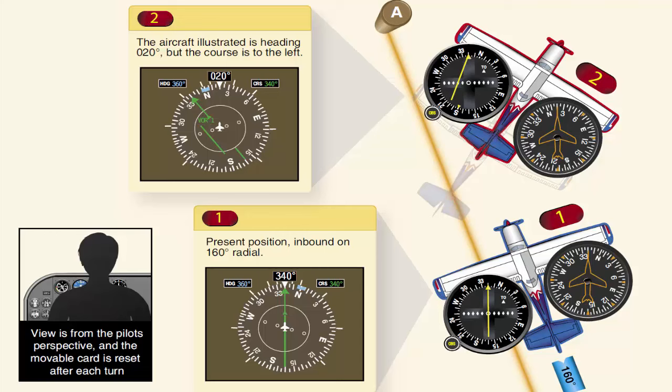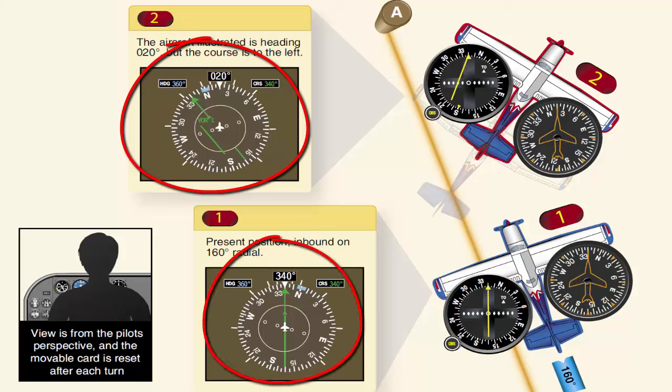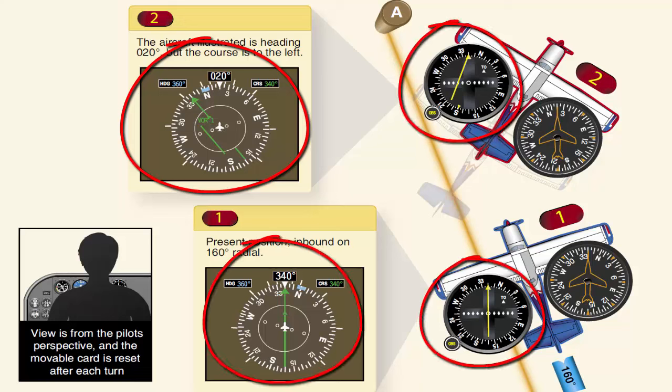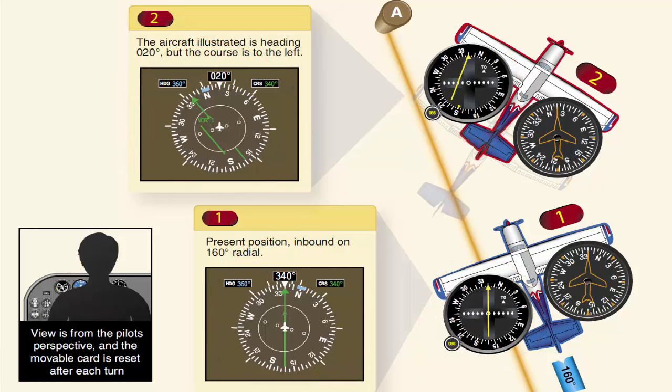Navigation instruments indicate the position of the aircraft in relation to a selected navigation facility or navigational fix. This group of instruments includes various types of course indicators, range indicators, glide slope indicators, and bearing pointers. Newer aircraft with more technologically advanced instrumentation provide blended information, giving the pilot more accurate positional information.